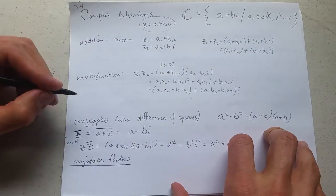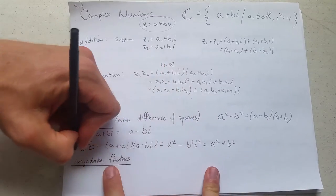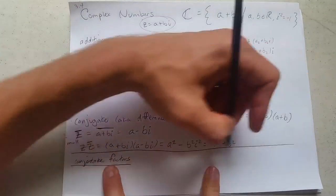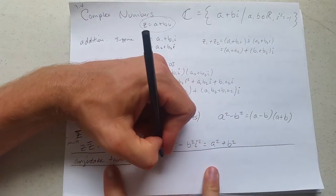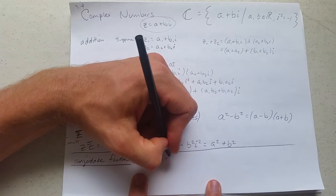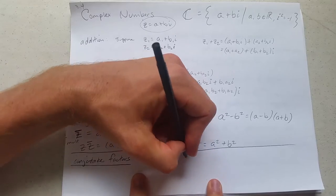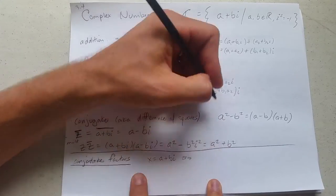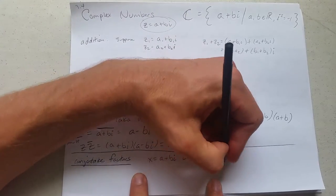Now what we're going to see is conjugate factors. Zeros correspond to factors. So if we had x equals some number z, if this was a zero, now this would be a complex zero, what factor would that correspond to?